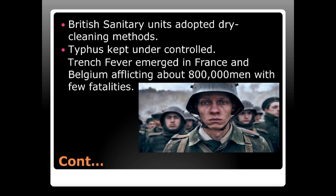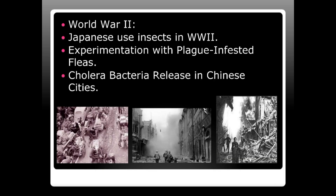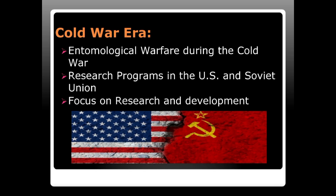During World War II, Japan used insects as biological weapons, conducting experimentation with plague-infested fleas on prisoners, and also releasing cholera bacteria in Chinese cities. During the Cold War era, entomological warfare was primarily a research program in the United States and the Soviet Union, focused on research and development.